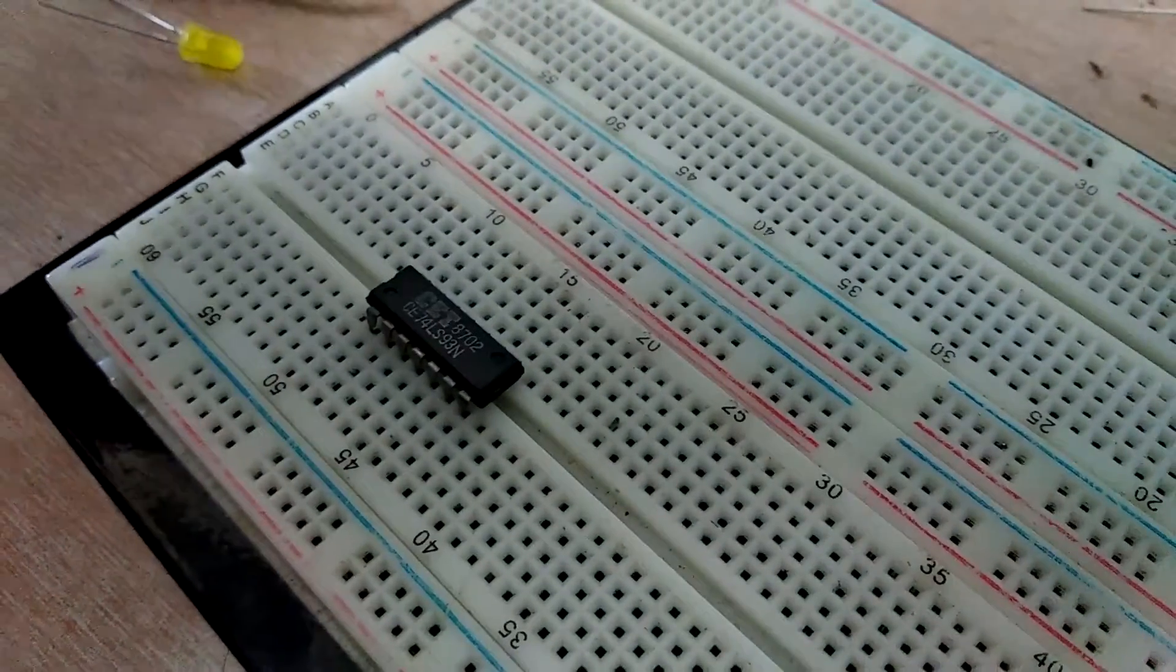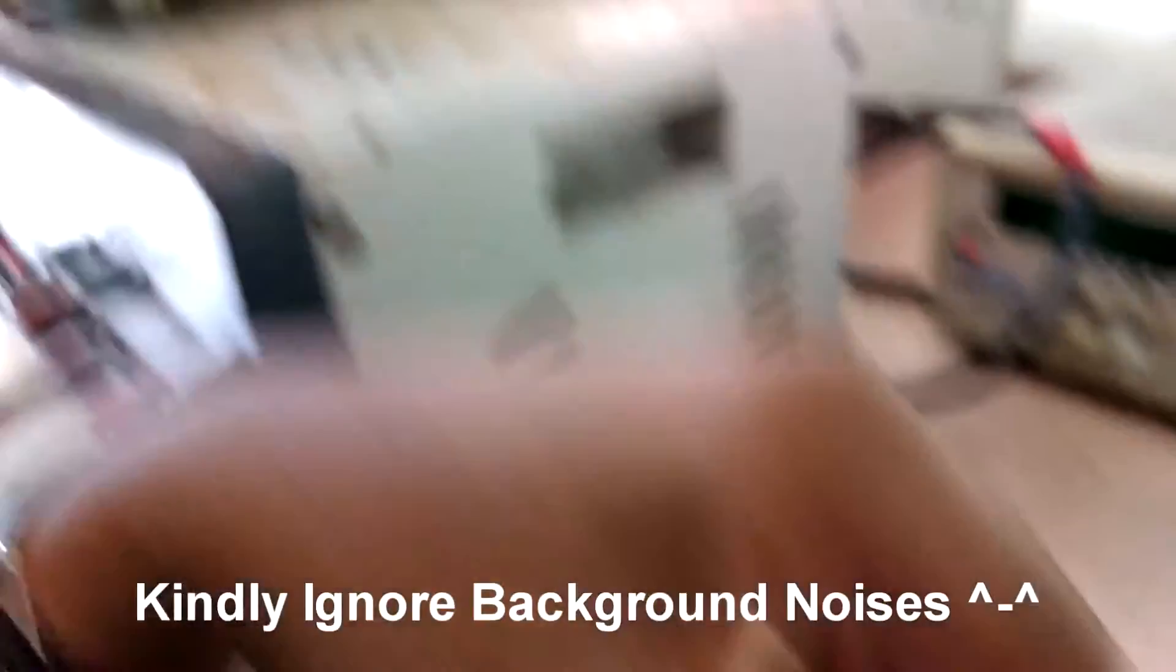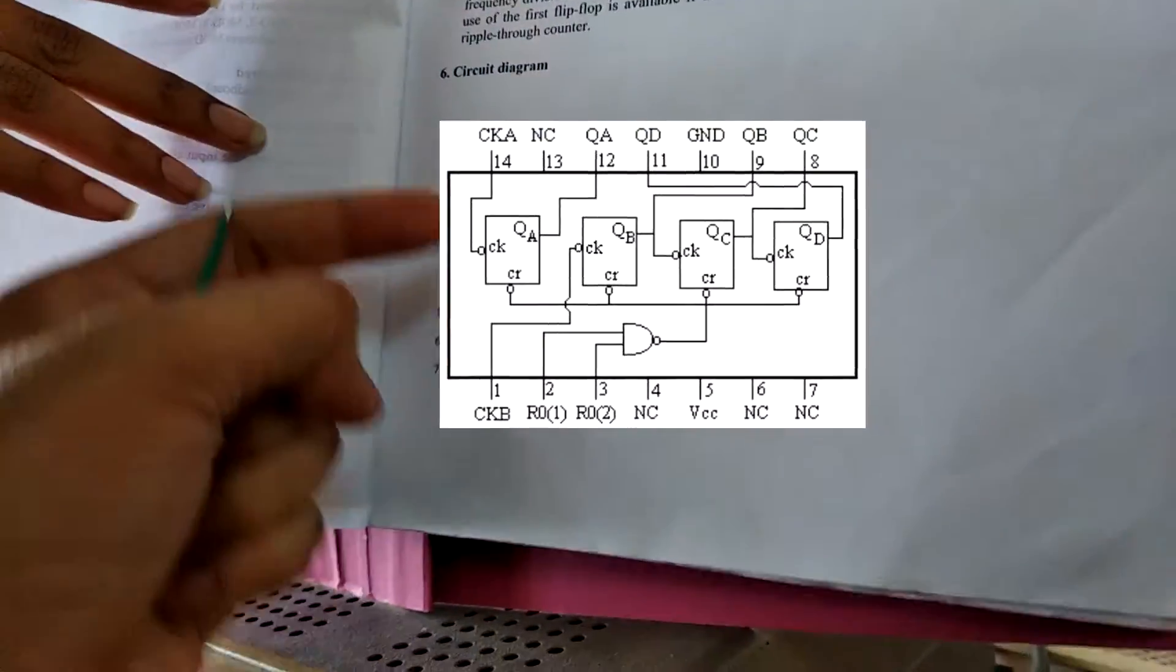Practical number 1, we use 7493 IC which is a mod 16 counter. Here are the pinouts.